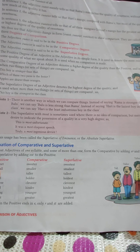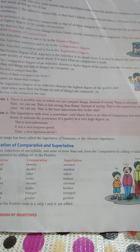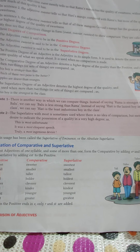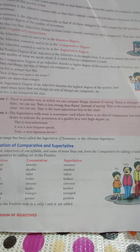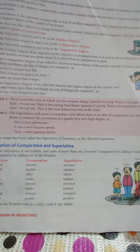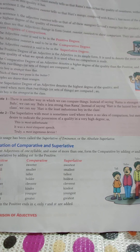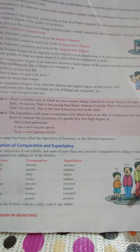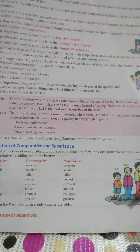The first degree is the positive degree — the adjective is kept as it is, with no change. In the second degree, which we call the comparative degree, we compare two things. In the third degree, called the superlative degree, the adjective shows the highest quality above all others.